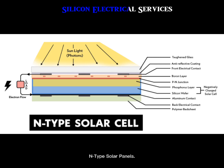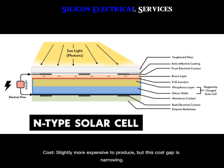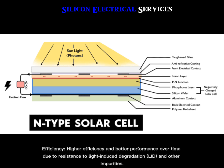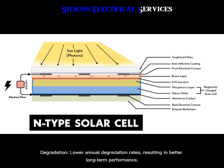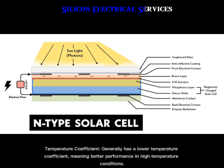N-Type solar panels. Material: typically made using phosphorus-doped silicon. Cost: slightly more expensive to produce, but this cost gap is narrowing. Efficiency: higher efficiency and better performance over time due to resistance to light-induced degradation (LID) and other impurities. Degradation: lower annual degradation rates, resulting in better long-term performance. Temperature coefficient: generally has a lower temperature coefficient, meaning better performance in high-temperature conditions.